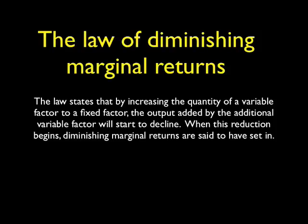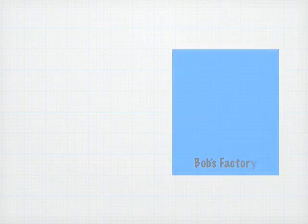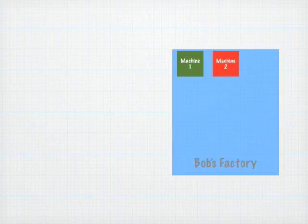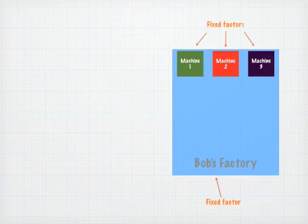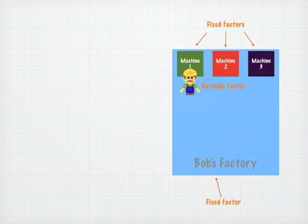I'll illustrate this concept with a simple example. Consider a factory which has three machines used in the production process. Both the factory and the machinery are examples of capital, and are assumed to be fixed factors of production in the short run — they can't be changed easily. For production to take place, labour is needed. Labour is assumed to be a variable factor in the short run, as it can be increased more easily, for example through the use of overtime.